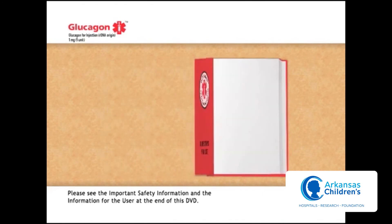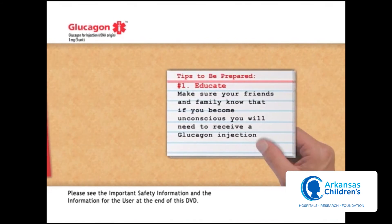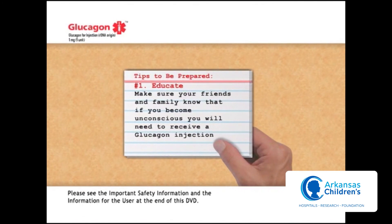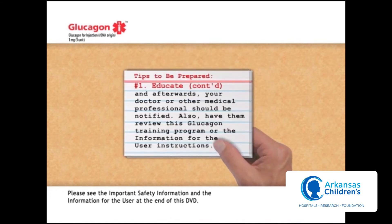Now let's consider some important tips to help you stay prepared. Tip number one: Educate. Make sure your friends and family know that if you become unconscious, you will need to receive a glucagon injection. Inform them that your doctor or a medical professional should always be notified afterwards. Have your friends and family view this training program or the accompanying Lilly Glucagon brochure for detailed instructions.